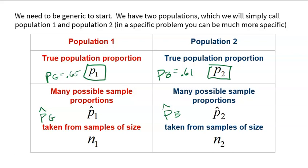An important note: the sample sizes do not have to be the same. The fairness of proportions means that even if we looked at 200 boys and 125 girls, it's okay — as long as we're comparing the proportion of each sample that did their homework, the difference in sample sizes doesn't really matter. So let's say we're going to look at a sample of 200 girls and a sample of 125 boys. The p-hats from each sample will vary around their true values.